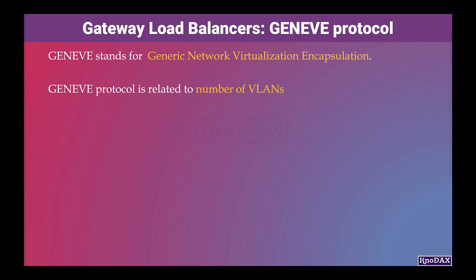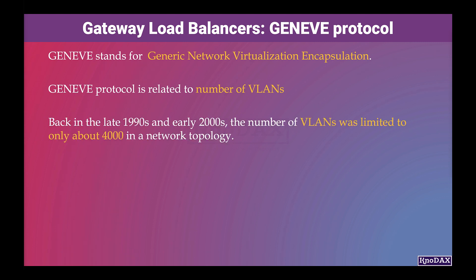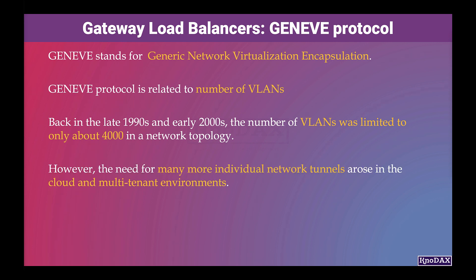The GENEVE protocol is related to the number of VLANs in a network topology. Back in the late 1990s and early 2000s, the number of VLANs was limited to only about 4,000 in a network topology. Back then, this was more than enough segments to accommodate networking.